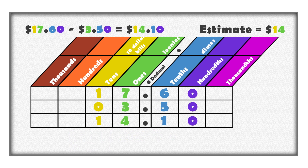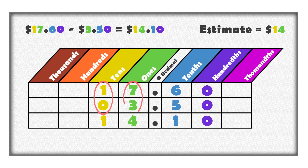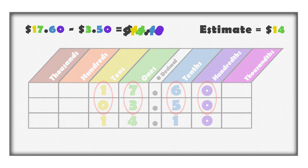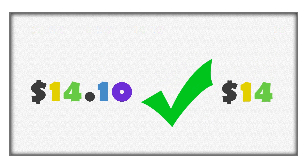When we subtracted these decimal values, we subtracted digits with the same place value. We can see that we get the same difference using each method. The estimate is still close to the difference, so we can be confident about the answer.